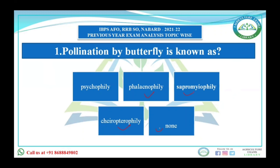Of the same plant or of another plant — if it is within the plant then that is self-pollination, if it is another plant then that is cross-pollination. The pollination done by insects is known as entomophily.